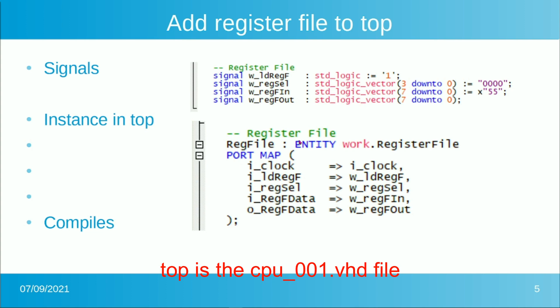When we throw that instance into the top, it port maps. The register file instance is called reg_file, with the entity name after the colon and 'work dot' before the entity name — easy to forget when copy-pasting. The iClock maps to the 50 MHz CPU clock. Load register maps to a W-underscore version using NandLand's naming convention where 'W underscore' indicates a wire. When we compile this, it compiles, so we know we have a functional register file. The load strobe isn't fully hooked up inside yet, but we have something that at least compiles — and if it compiles, we're usually 99% of the way there.